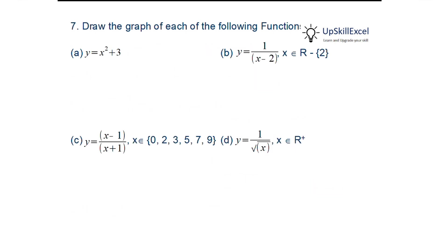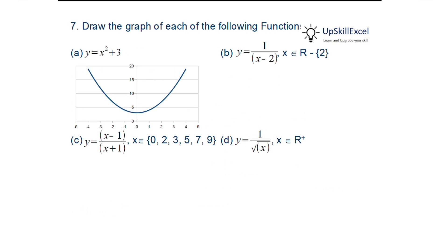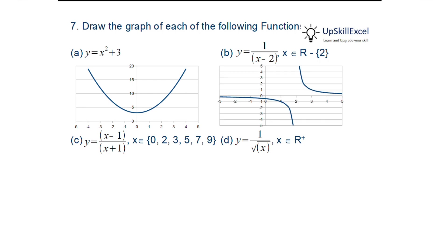Draw the graph of each of the following functions. First, y = x²+3: it is an x² parabola symmetric about the y-axis, shifted up by 3. Second, y = 1/(x−2), x ∈ ℝ−{2}: it is an inverse (hyperbola) graph, and at x = 2 it goes towards infinity.